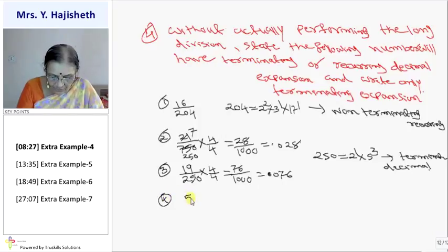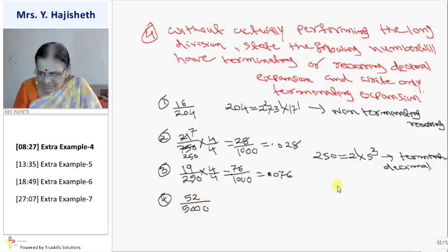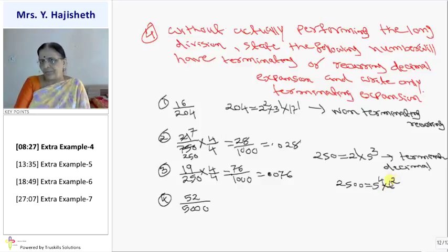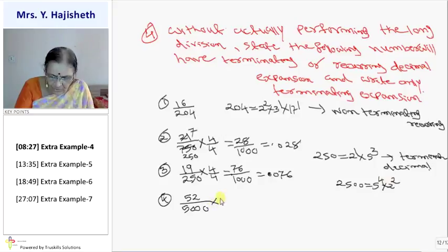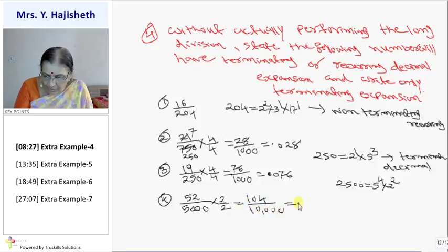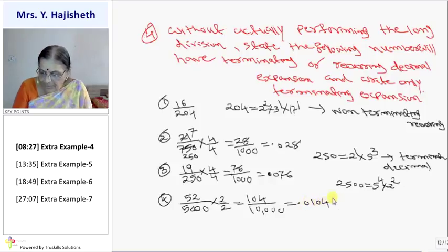Now fourth sum is given as 52 by 5000. If I reduce it, I do not need to do it. If I make 5000, then 5 raised to 4 into 2 raised to 2. So I have to multiply it with 2 raised to 2 in order to make 10 raised to 4. So I multiply both by 2 by 2. So it is 104 by 10,000. So it is 0.0104. And this is terminating decimal.